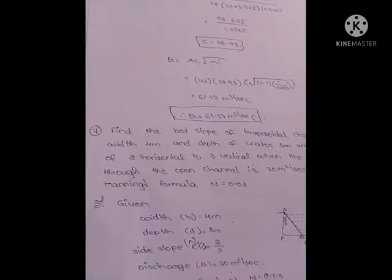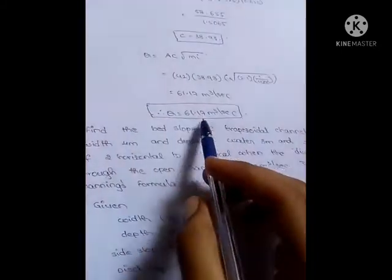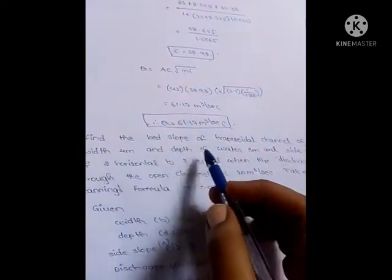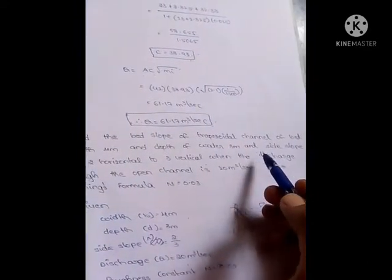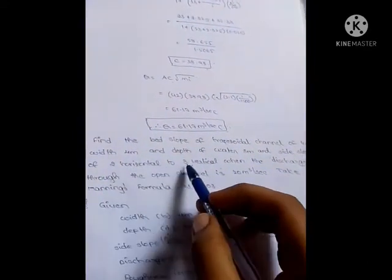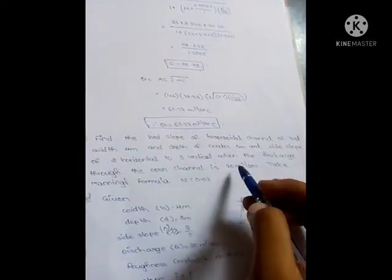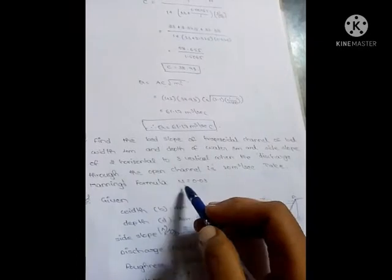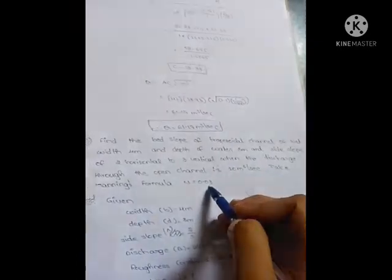Next, Manning's formula problem: Find the bed slope of a trapezoidal channel of bed width 4 meters, depth of water 3 meters, and side slope of 2 horizontal to 3 vertical, when the discharge through the open channel is 20 meter cube per second. Take Manning's n equal to 0.02.